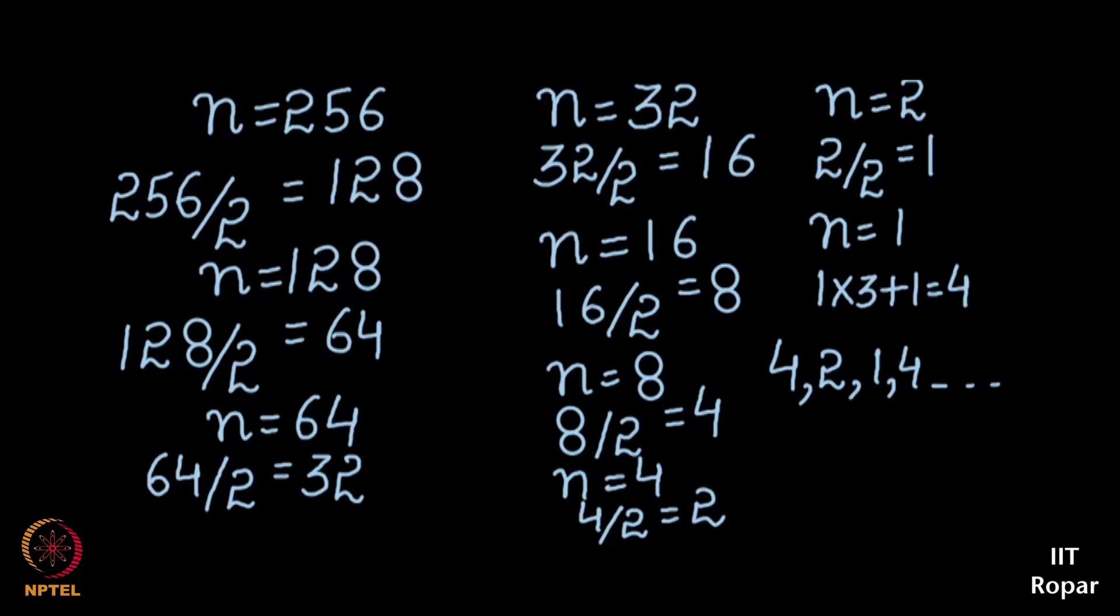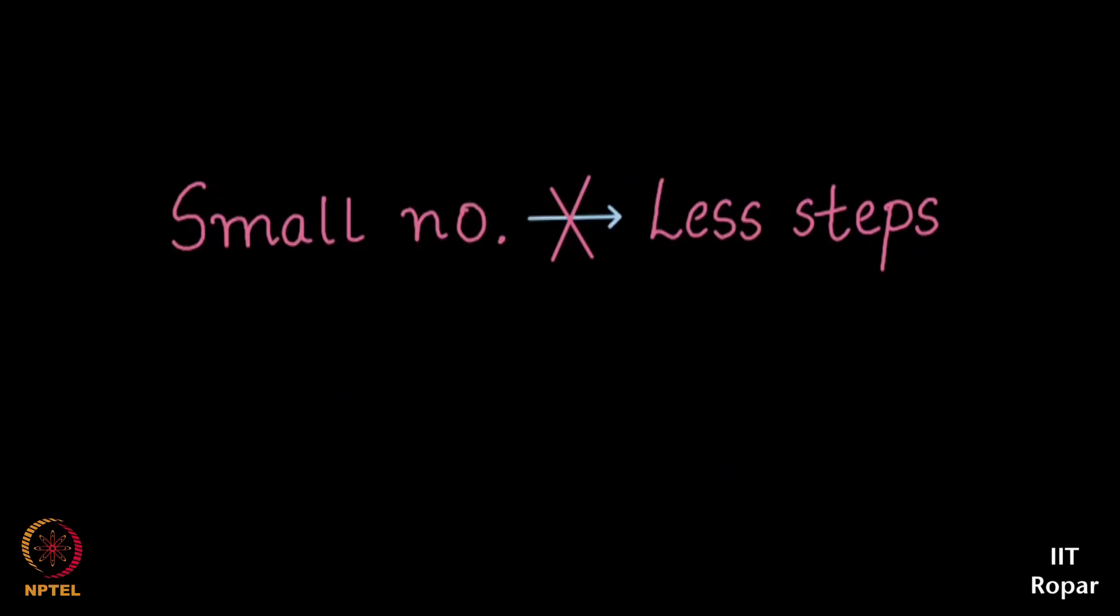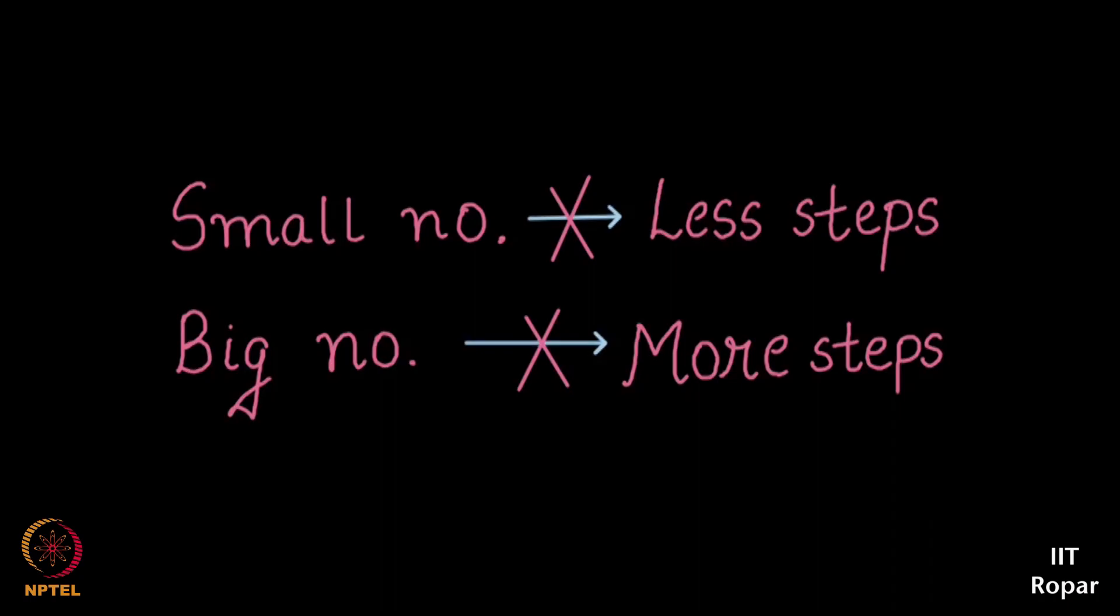You see a small number like 7 took such a long number of steps, a number like 256 how many steps did it take? Let me count, 1, 2, 3, 4, 5, 6, 7, 8, 9 steps as opposed to more than 15 steps for 7, correct? So smaller the number doesn't mean smaller steps, bigger the number doesn't mean bigger steps. In fact this piece of code is so not understood, given n when will it stop? We still don't know.